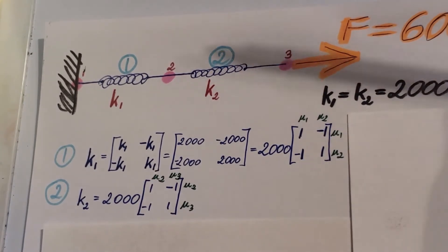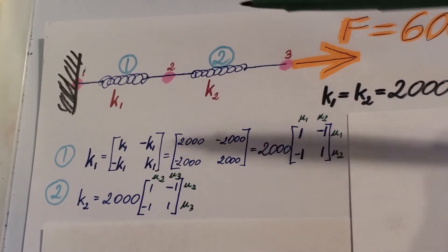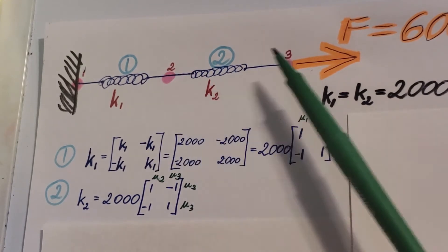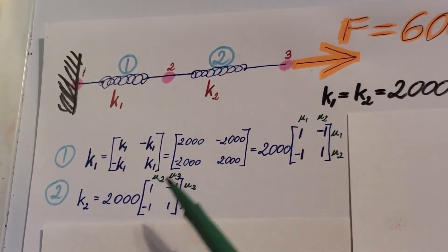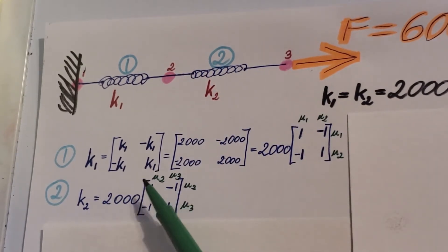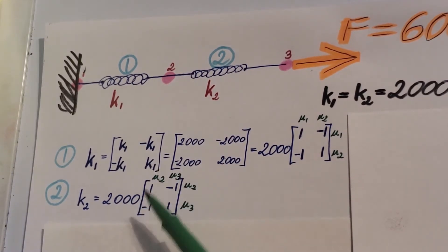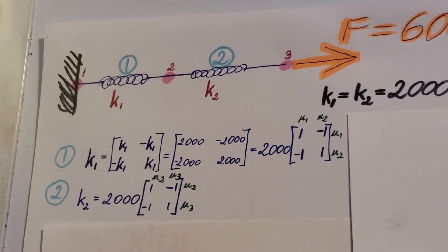We do the same for element 2. K2 equals 2000 times the same matrix. Element 2 is bordered by nodes 0.2 and 3, so we mark it U2, U3, U2, U3. This information will be very important at the next step, where we're going to assemble our global stiffness matrix.